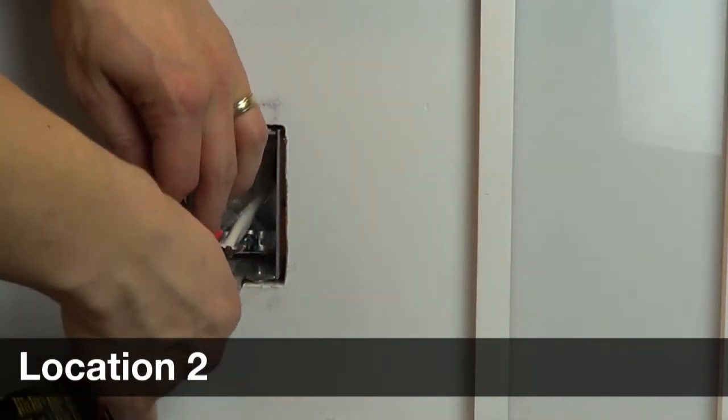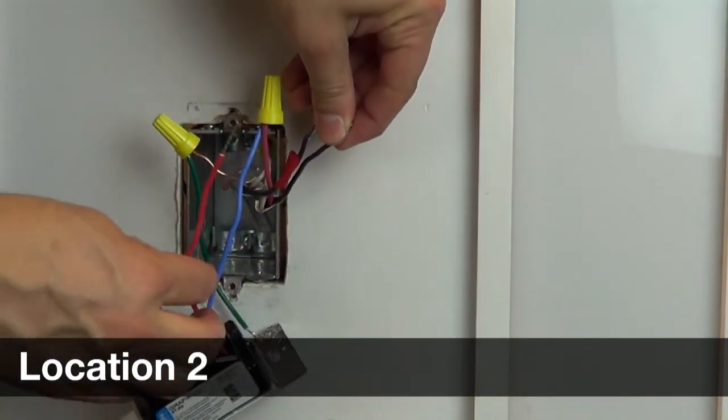Connect the remaining two wires with the red wire from the companion dimmer under a single wire cap.